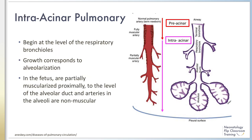The intra-acinar arteries are present in the alveolar ducts and alveoli. In contrast to the pre-acinar arteries, these arteries develop from the mesoderm surrounding the developing airway by angiogenesis, a process involving growing and branching of existing vessels to form new ones.